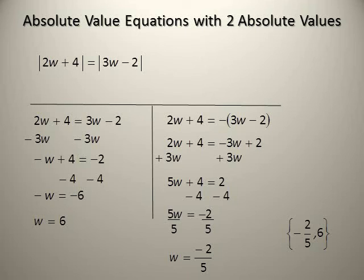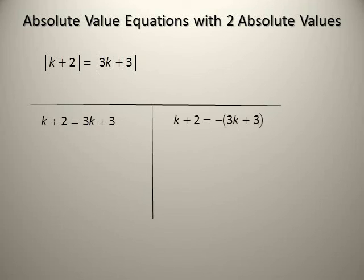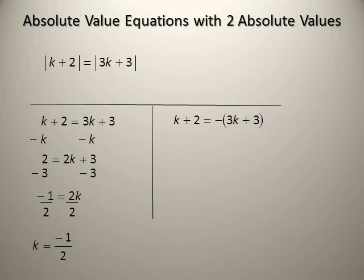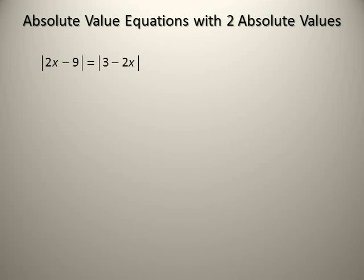If |k + 2| = |3k + 3|, change the sign of one side. So k + 2 = 3k + 3 or k + 2 = −(3k + 3). First: −2k = 1, so k = −1/2. Second: k + 2 = −3k − 3, giving 4k = −5, so k = −5/4. Check your answer, then write the solution set: {−5/4, −1/2}.